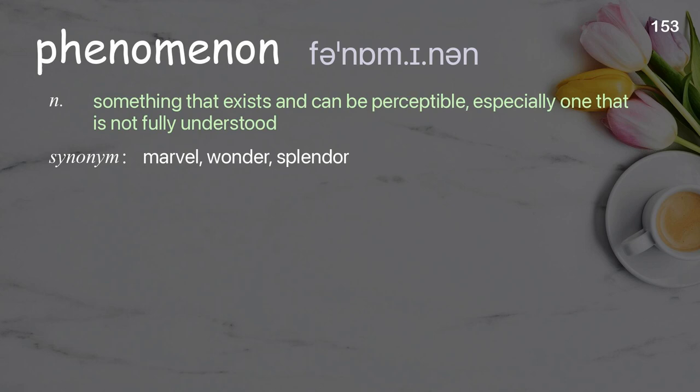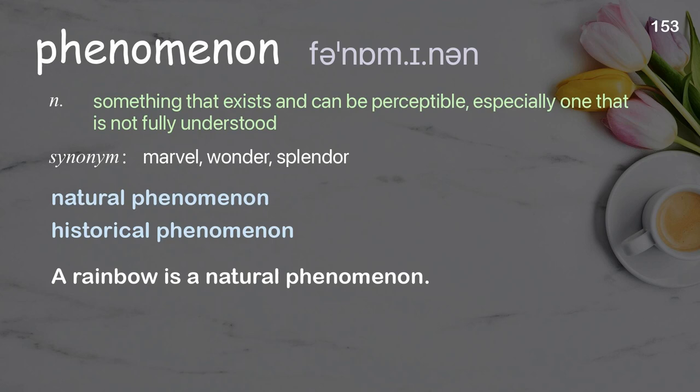Phenomenon: something that exists and can be perceptible, especially one that is not fully understood. Examples: natural phenomenon; historical phenomenon. A rainbow is a natural phenomenon.